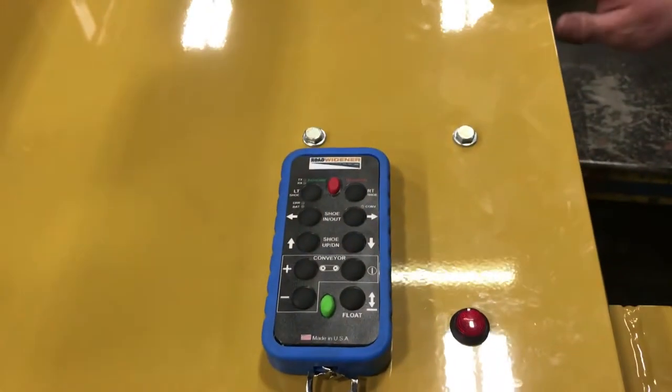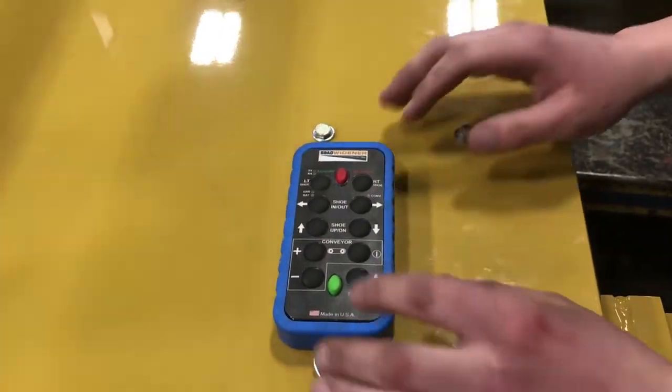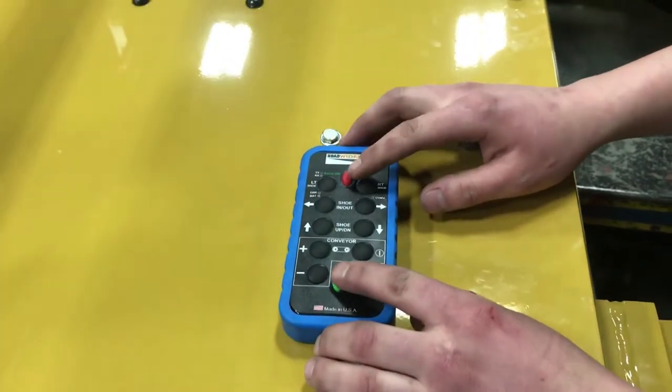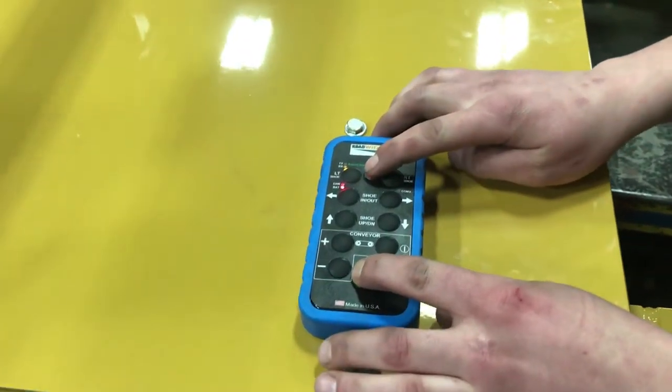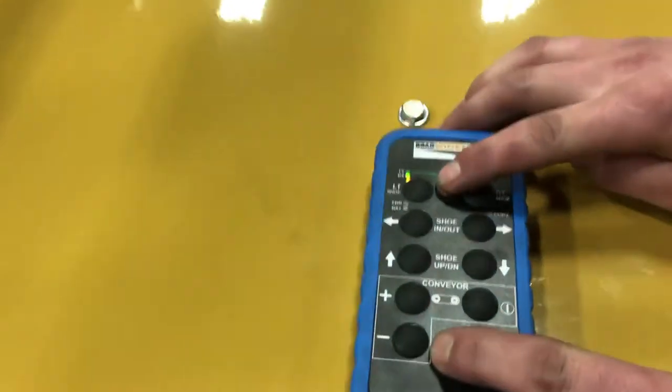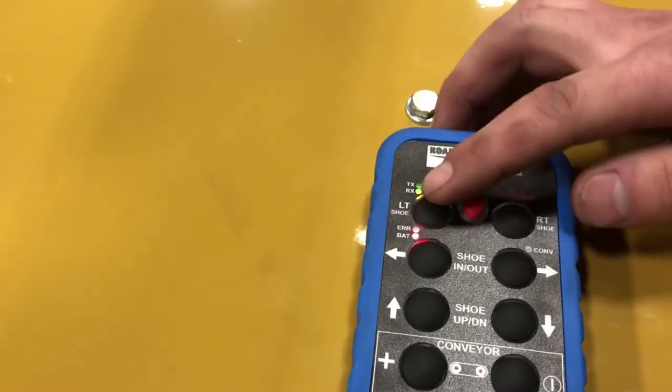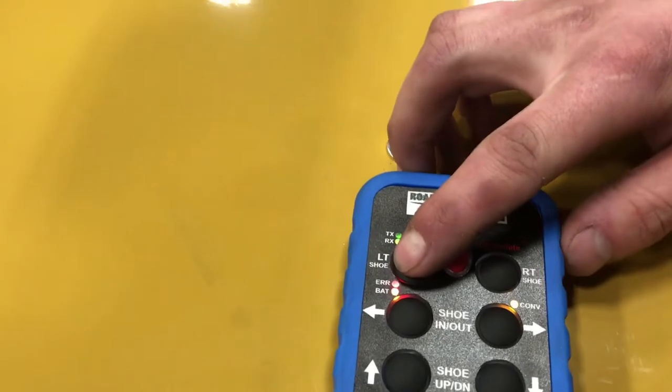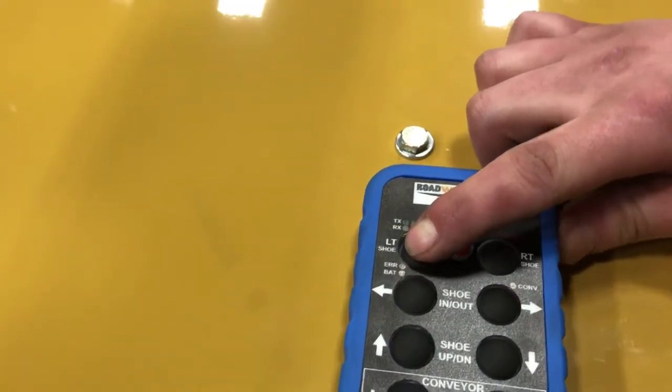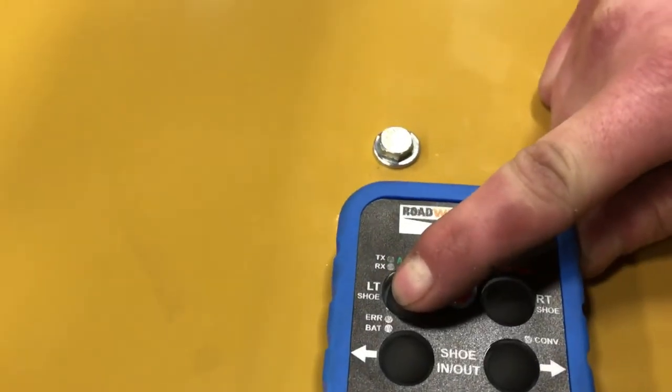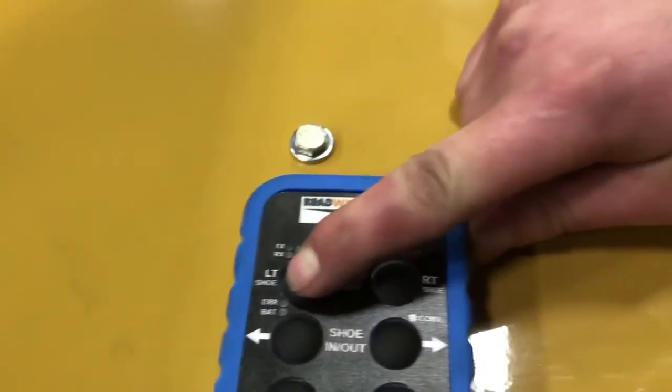At this point, press and hold the red and green buttons. When that starts flashing, release those buttons and hold the left hand shoe button in. When that starts flickering, we need to power the machine on.